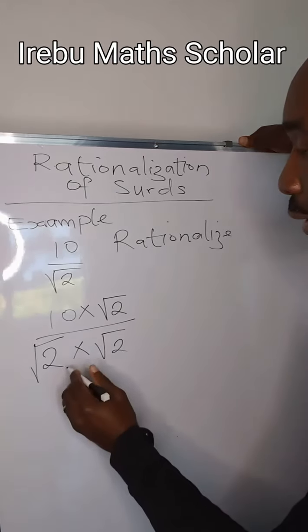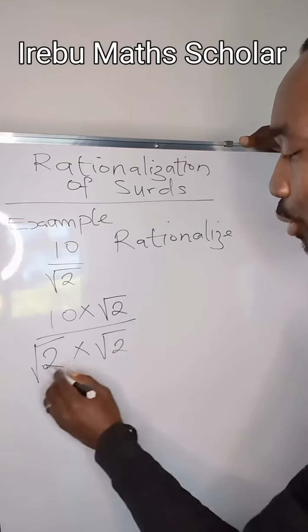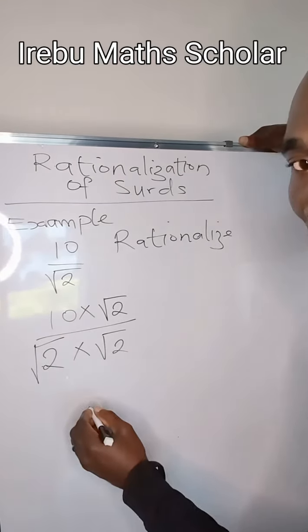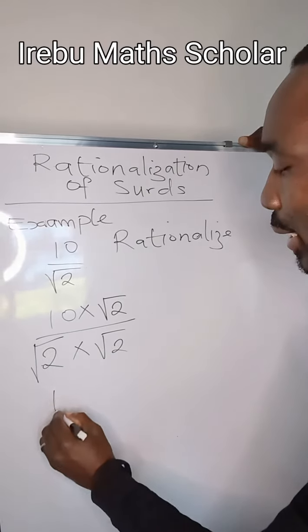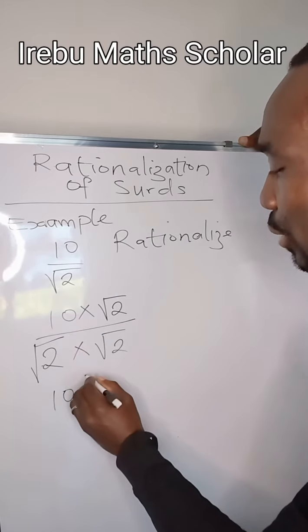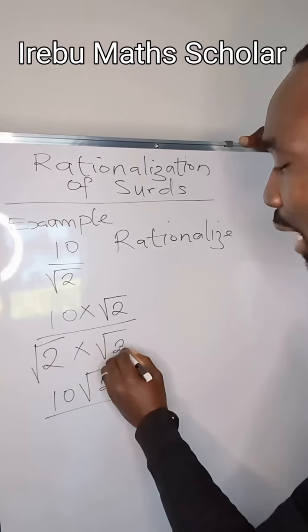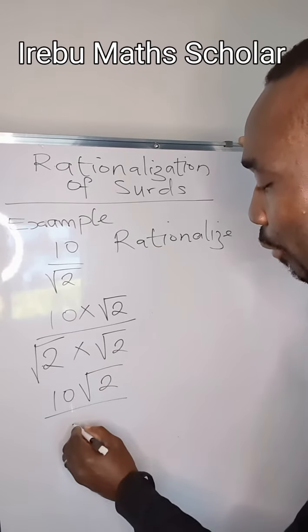In doing this, these can multiply themselves out. So to continue with this problem, you're going to have 10 because 10 times root 2 is 10 root 2, and root 2 times root 2 will give us 2.